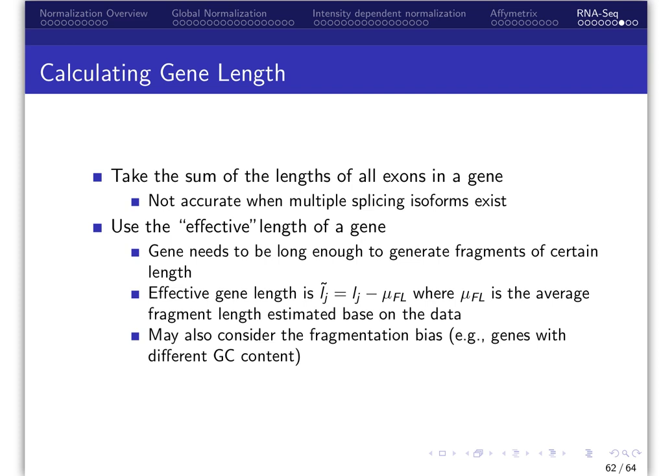The effective gene length, L tilde, could also be used. Some methods also consider GC content because there may be different length distributions due to GC bias.